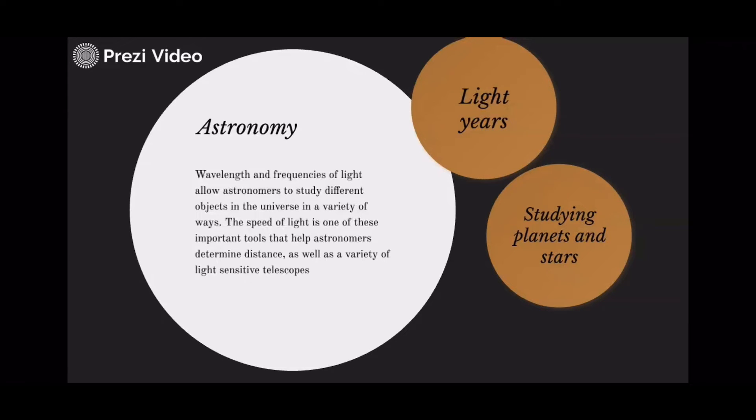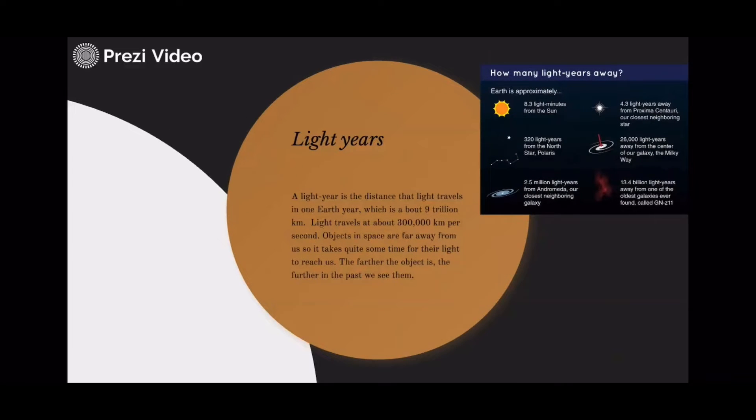Light years. A light year is the distance that light travels in one Earth year, which is about 9 trillion kilometers. Light travels at about 300,000 kilometers per second.